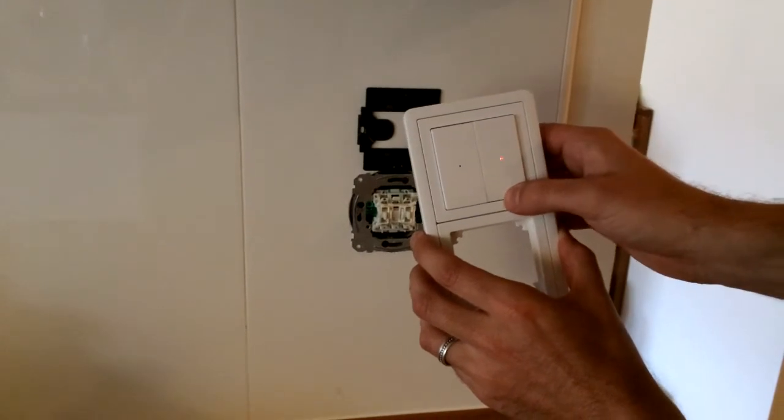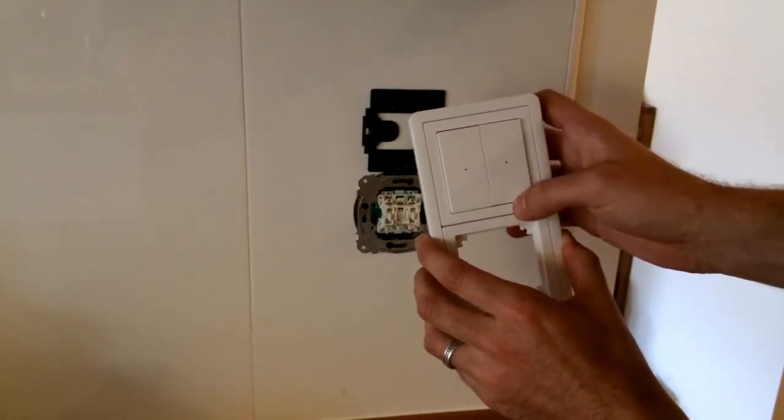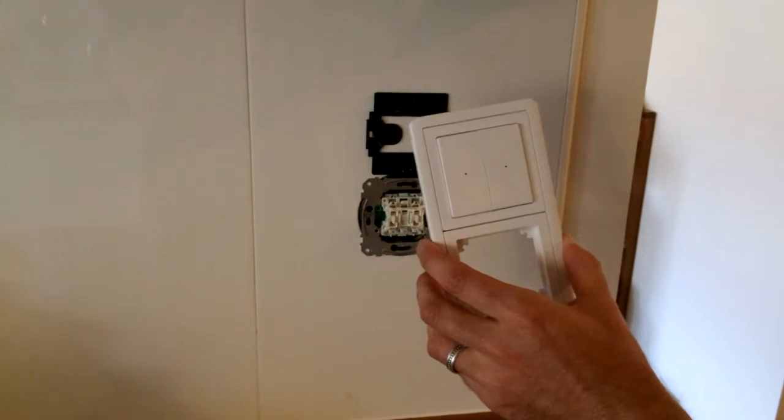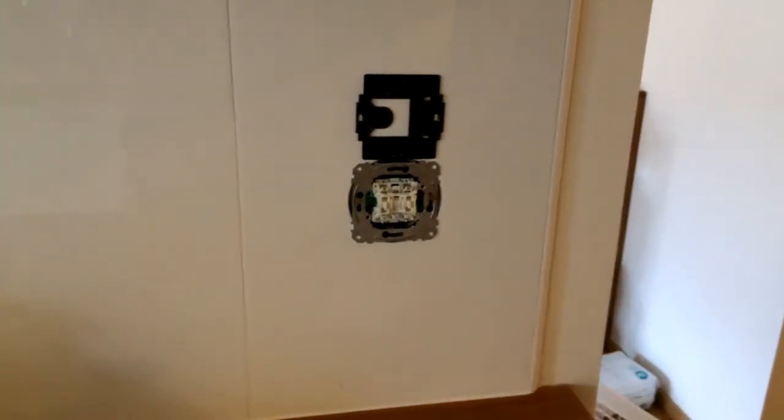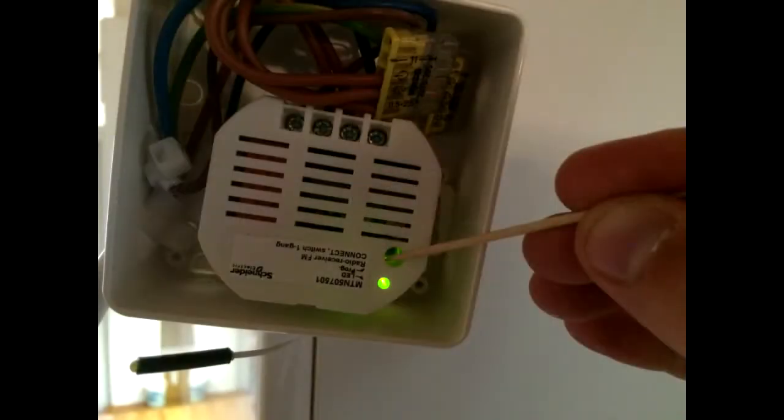Back to our problem though, when you encounter the issue of your lights no longer working, the most probable cause is that the light switch got disconnected from the receiver. In other words, the light switch no longer sends the command to turn your lights on or off to the actual box that does the work.